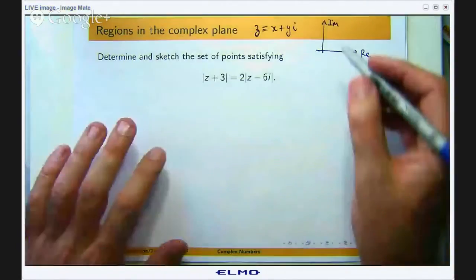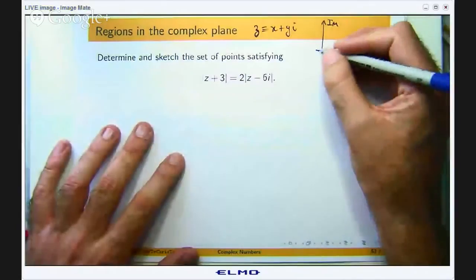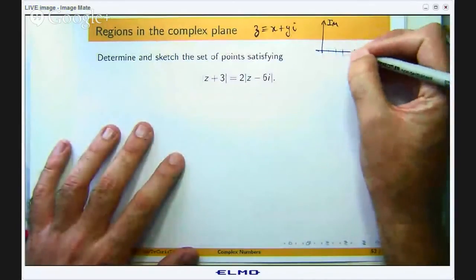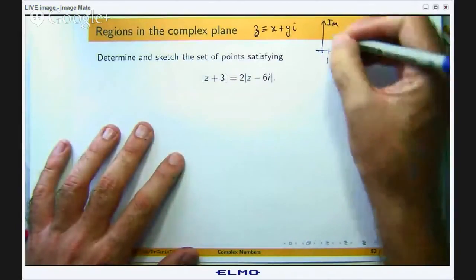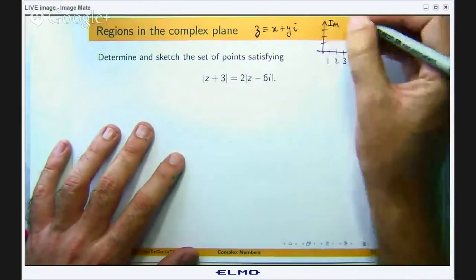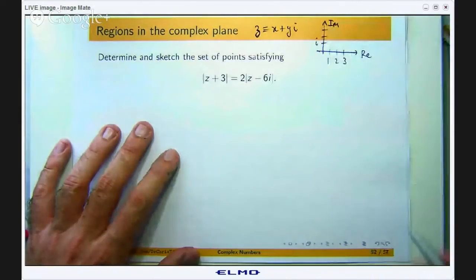So here it is. Along the real axis you have 1, 2, 3. Along the imaginary axis you have i, 2i, 3i, 4i etc.